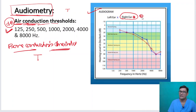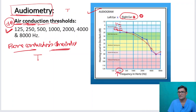At 250 Hz, when we give sound to the patient starting at 0 decibels, he cannot hear. At 5 — cannot hear. At 15 — cannot hear. But at 15 decibels he can hear. So 250 Hz at 15 decibels is the hearing threshold at that frequency. Another example: at 8000 Hz, the patient can hear at approximately 70 decibels, so the threshold for 8000 Hz is 70 decibels.